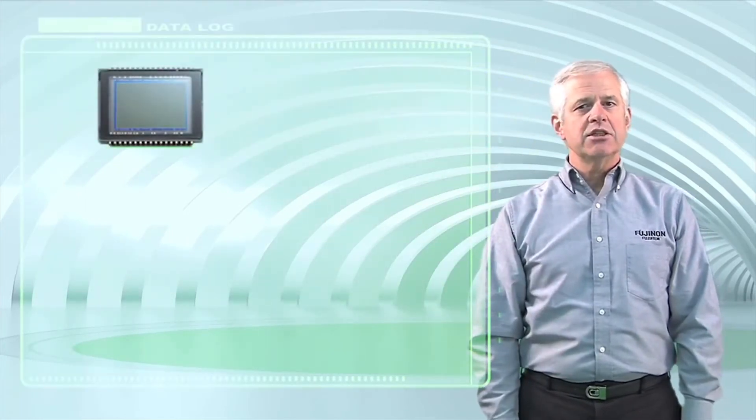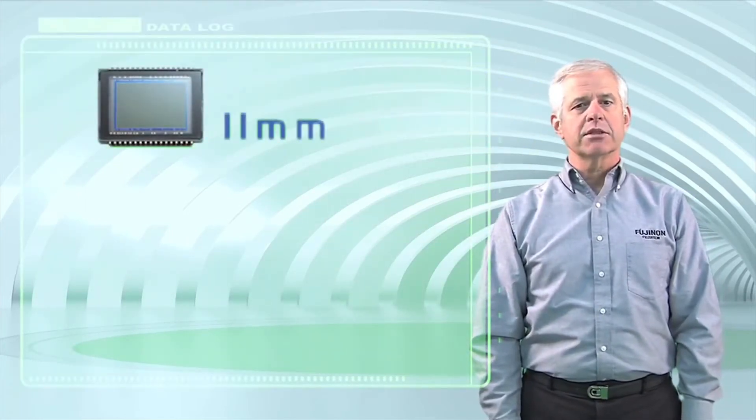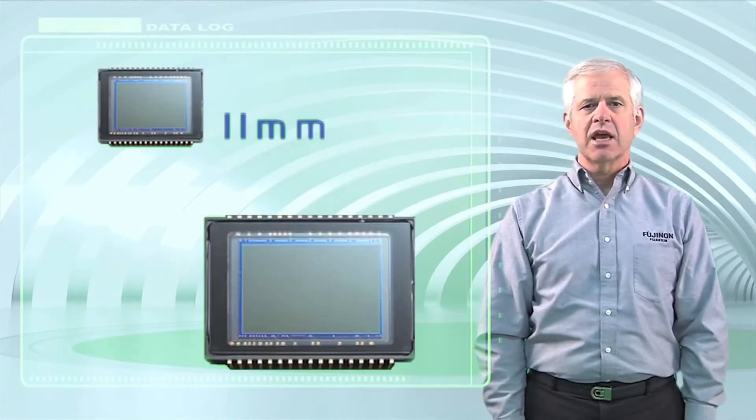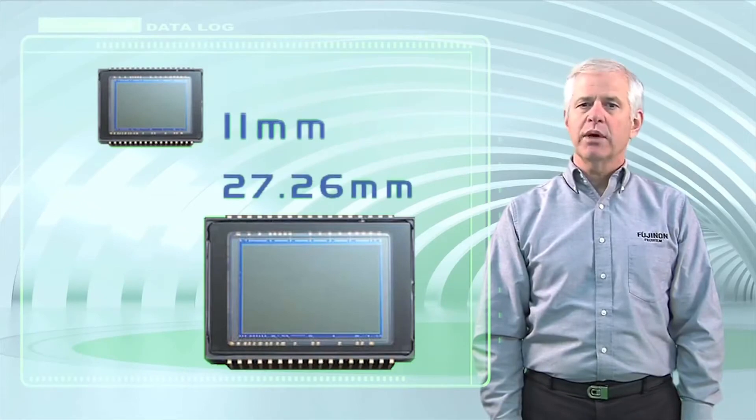Today's digital cinema lenses can replicate much of their film counterparts. By using new designs and technologies — for example, the diagonal image size of a CCD in a traditional HD camera is 11mm, while a 35mm film format lens has a diagonal image size of 27.26mm. New digital lenses are now available that have the same angular field of view as the most commonly used 35mm film format lenses, so cinematographers can easily adapt to the HD format.